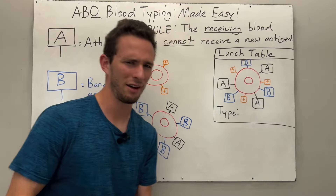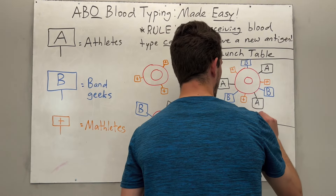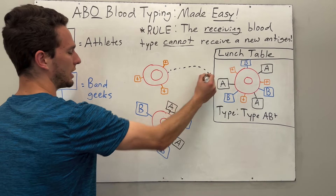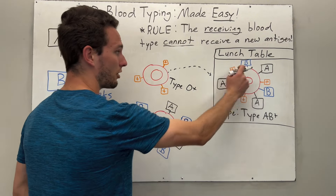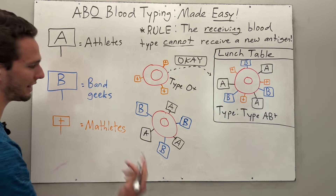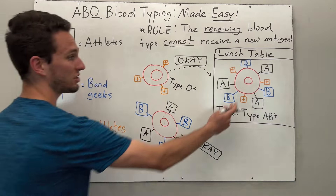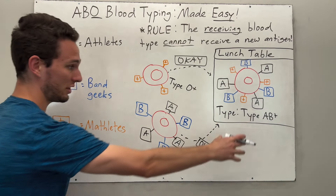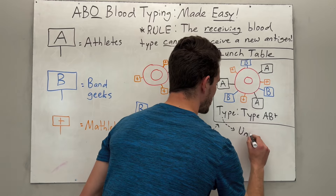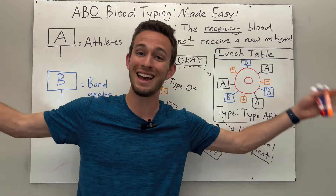Now let's extend the analogy. We have an incredibly accepting lunch table with athletes, band geeks, and mathletes all together — that's type AB positive, containing all three antigens. If O positive donates, its mathlete antigen can associate with the mathletes already at the table — no new antigen introduced, so that's fine. AB positive can receive literally any blood type because whatever is donated, there are no new antigens being presented. That makes it the universal recipient.